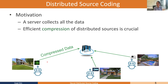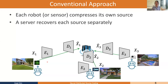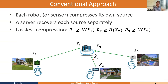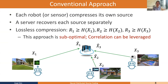In the current system, each robot, sensor, or information node compresses its own source separately. This encoder encodes X1, another encoder encodes X2 and X3 separately, and the receiver recovers each source separately. Under this setting, to achieve lossless compression, we need rates where each rate is greater than or equal to the entropy of its source. This approach is clearly suboptimal because we are not leveraging any correlation in the datasets.